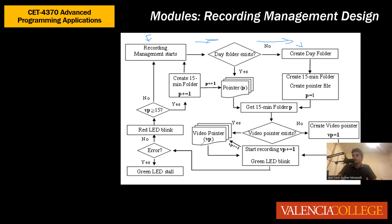If it's the second time you turn on the Pi, then yes, a date folder exists, and a pointer file will be accessed. This is because if a date folder exists, a pointer file was already created. From there, both paths lead to creating or accessing a 15-minute folder — since a 15-minute folder is created at the time the date folder is created. The pointer P for the 15-minute folder will be 1 if the date folder was newly created, or whatever value is stored in the pointer file if it already existed.